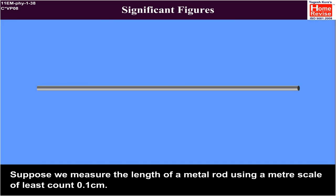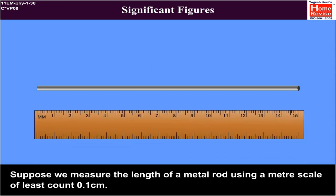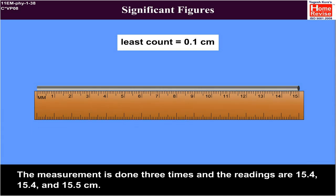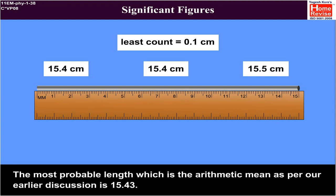Suppose we measure the length of a metal rod using a meter scale of least count 0.1 cm. The measurement is done 3 times and the readings are 15.4, 15.4 and 15.5 cm. The most probable length which is the arithmetic mean as per our earlier discussion is 15.43.